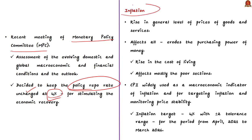What is inflation? Inflation is the rise in the general level of prices of goods and services. This is the basic definition. It erodes the purchasing power of money. For example, with 100 rupees you can buy 5 kg of onion, but due to inflation, with the same 100 rupees you can only buy 4 kg of onion. That is inflation — a rise in the prices of goods and services.